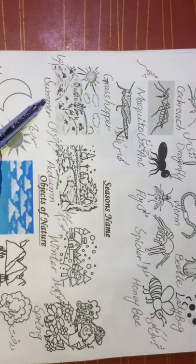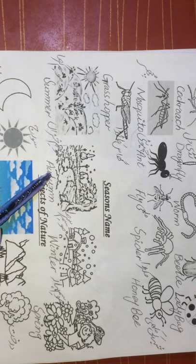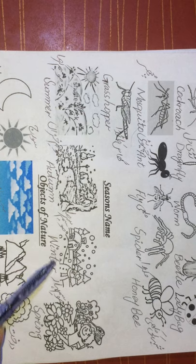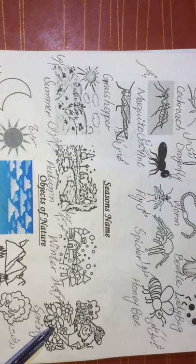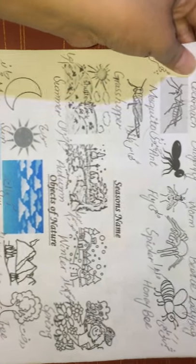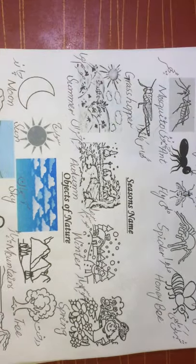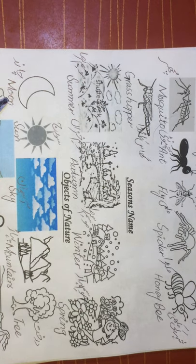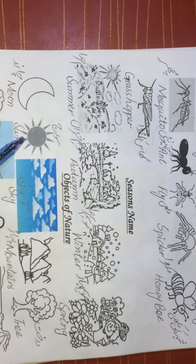Summer (moosme garma), autumn (moosme khiza), winter (moosme sarma), spring (moosme bahar). Now we are going to start the objects of nature. Moon (chaan), sun (suraj), sky (asmaan), mountains (pahaar), tree (darat), flower (pool), river (daria), cloud (badal), sea (samander).